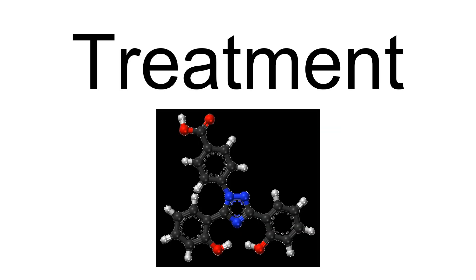Treatment of individuals with CDA usually consists of frequent blood transfusions, but this can vary depending on the type that the individual has. Patients report going every two to three weeks for blood transfusions. In addition, they must undertake chelation therapy — either deferoxamine, deferasirox, or deferiprone — to eliminate the excess iron that accumulates. Removal of the spleen and gallbladder are common.